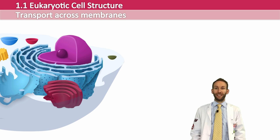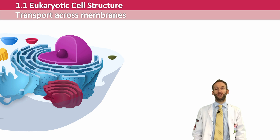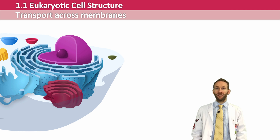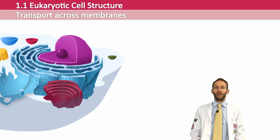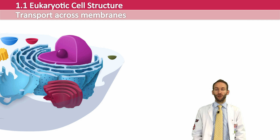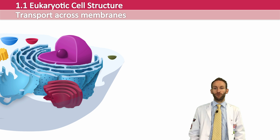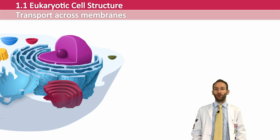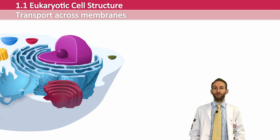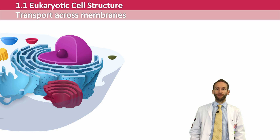Now that we know the structure of a membrane, we can actually look at how it controls what comes in and what goes out of the cell. Cells need all sorts of things in order to carry out the many functions that they do, but also they're going to make waste which they need to get rid of. We're going to look in this section at the various different ways that molecules can move in and out of these cells.